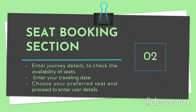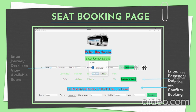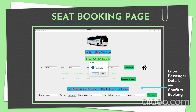The seat booking page consists of various sections: from arrival to destination, and the journey date. For the journey date, I have used a calendar library included in Python for better functionality. It shows all available options — for example, bus one India Travels, operator bus type AC sleeper, configurations like 2x2, 2x3, 3x3, number of seats available, and the fare.